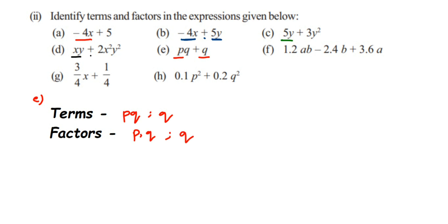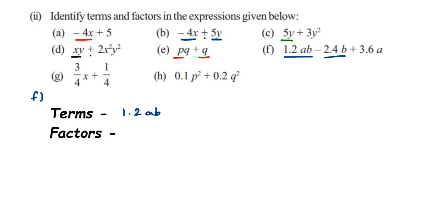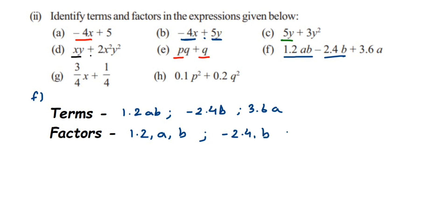Next expression: 1.2ab minus 2.4b plus 3.6a. Three terms are present: 1.2ab, minus 2.4b, and 3.6a. The coefficients are decimals. For the first term, factors are 1.2, a, and b. For the second term, factors are minus 2.4 and b. For the third term, factors are 3.6 and a.